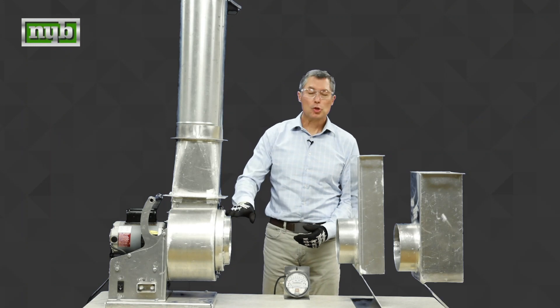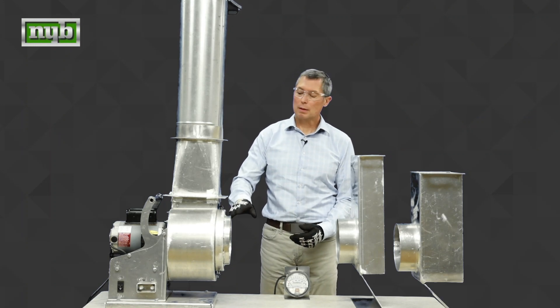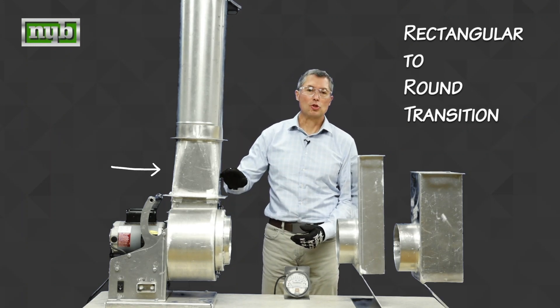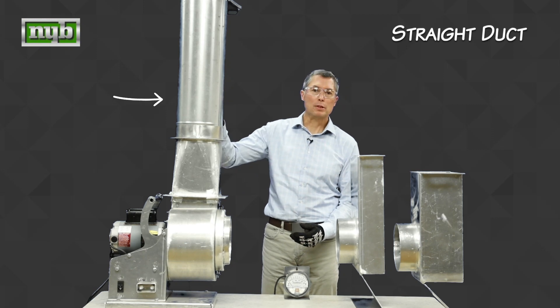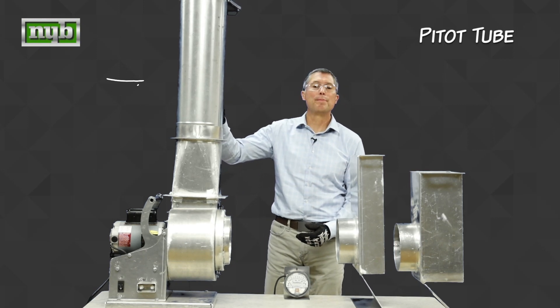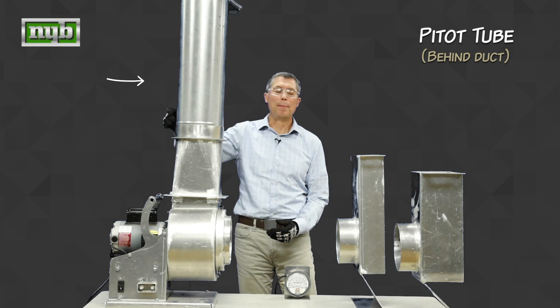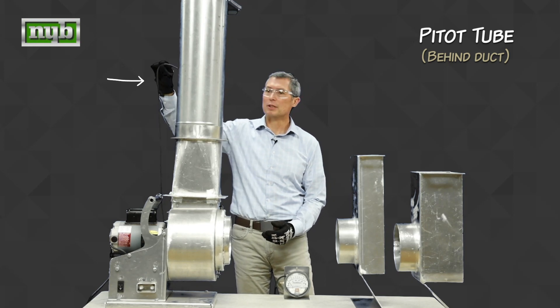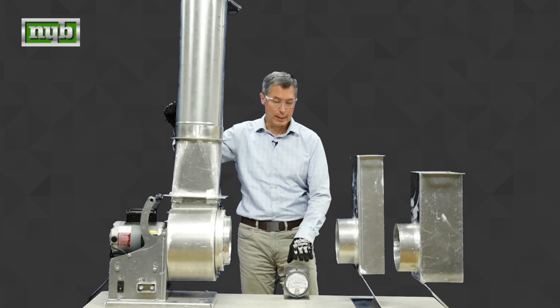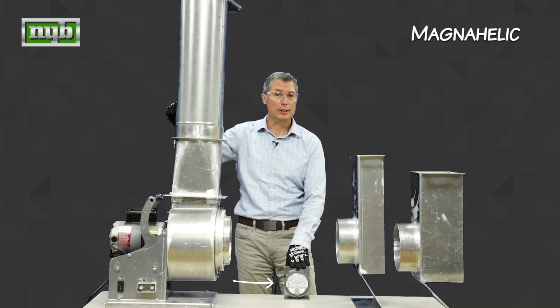Let's talk about the demo equipment used for our little adventure today. First, we have a fan, open inlet. We have a rectangular round transition, round piece of ductwork. In that ductwork we have a pitot tube. I know you can't see it, but attached to the pitot tube is this flexible tubing here that goes to our magna-helic gauge.